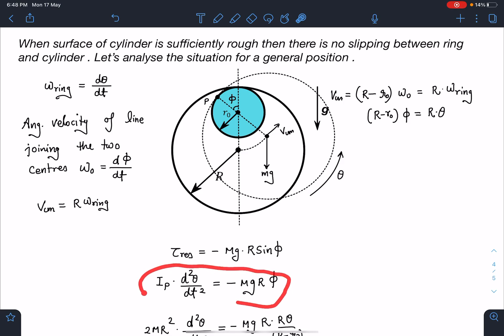Most of the students make mistake in this step itself. They assume this itself is the SHM equation, but you must be very, very careful here. d²θ/dt² is coming and here it is φ. So this is not the desired equation where we are going to get the time period value. We need to bring either completely into θ or completely into φ. So that's where we are going to use this relation here.